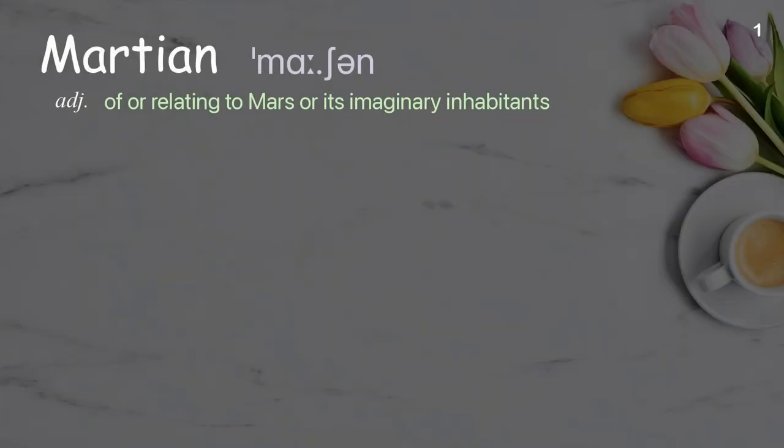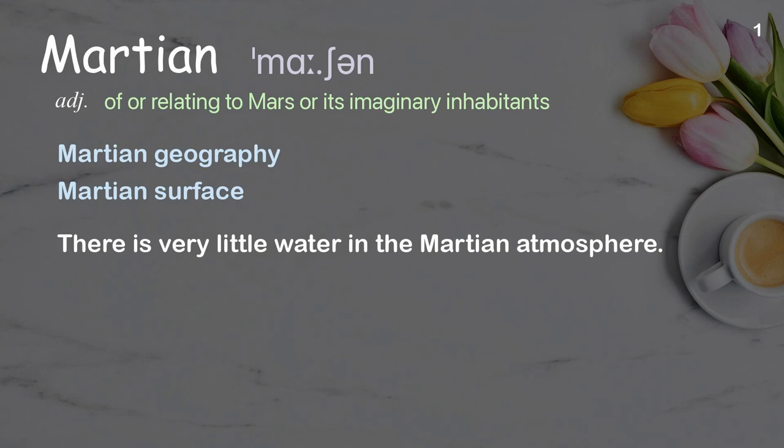Martian: Of or relating to Mars or its imaginary inhabitants. Examples: Martian geography, Martian surface. There is very little water in the Martian atmosphere.